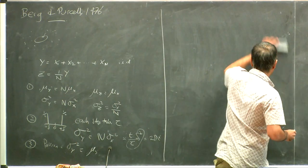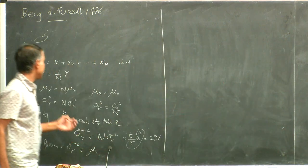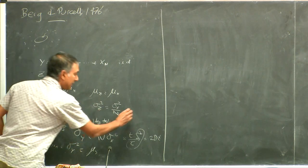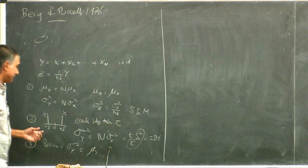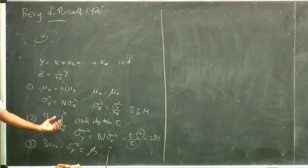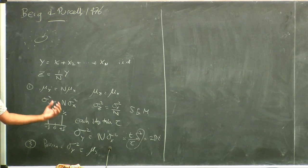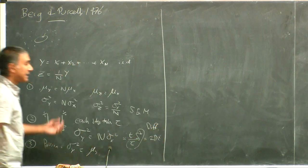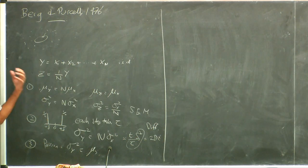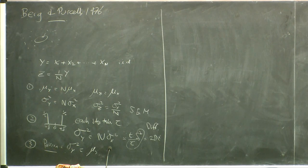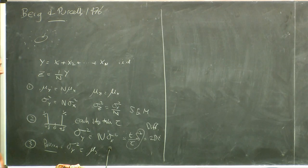Three completely different interpretations of exactly the same equation — which is why I say it's one of the most important things and you should completely internalize it. The first application is the definition of the standard error of the mean. The second is that during diffusion, the standard deviation increases as the square root of time. The third is that for a Poisson distribution, the variance equals the mean.